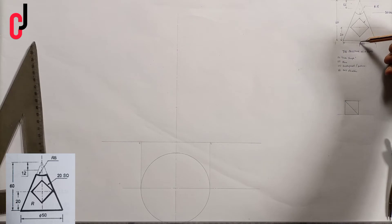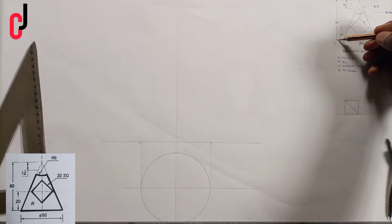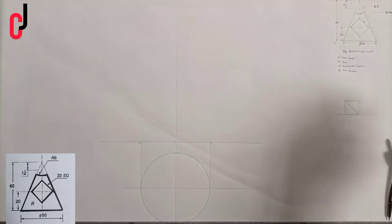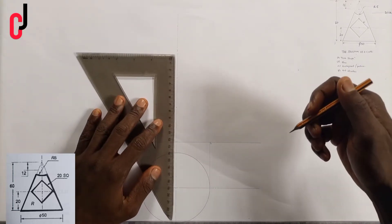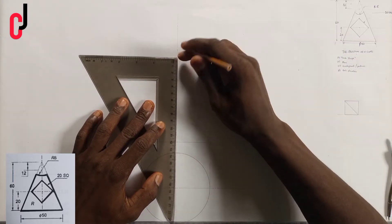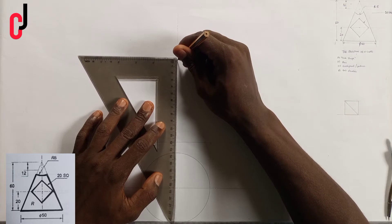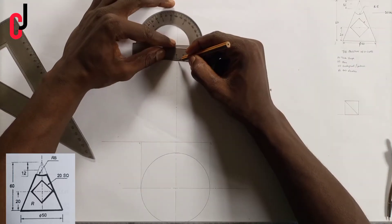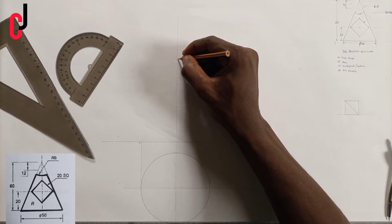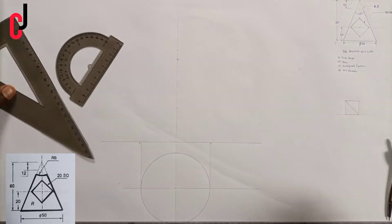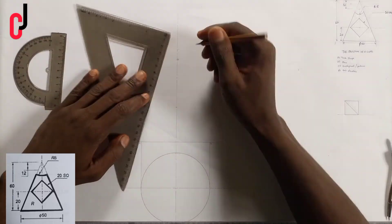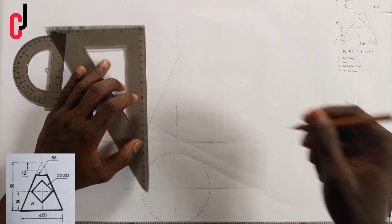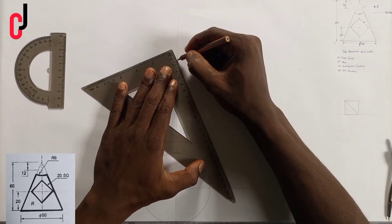From my diagram, the height of my cone is 60mm, so I'll measure 60mm upward and indicate it with a small mark, calling that point C. Then I'll join point C to point A with a straight line, and also join point B to point C with a straight line.